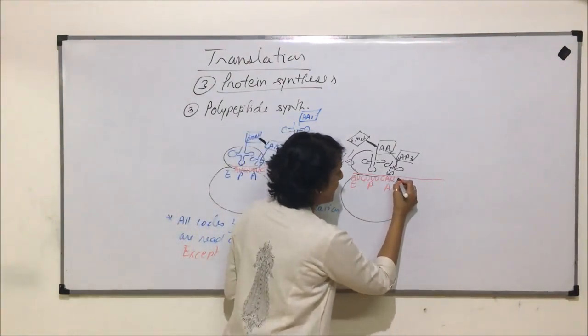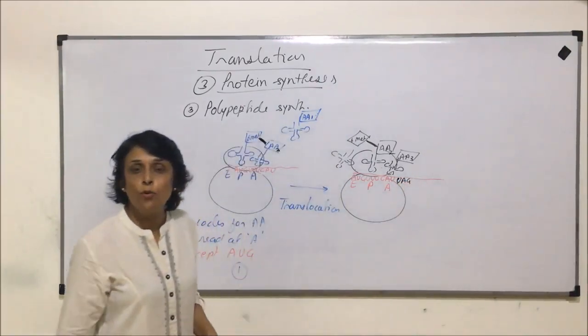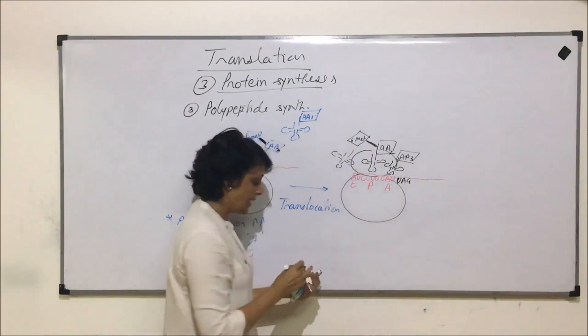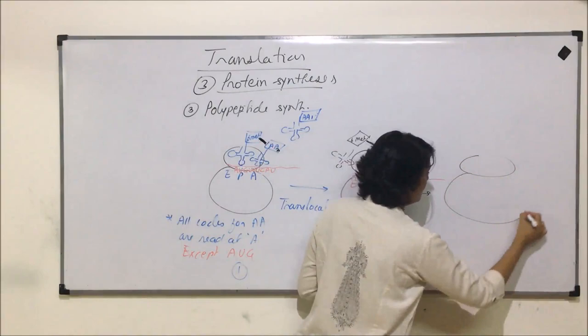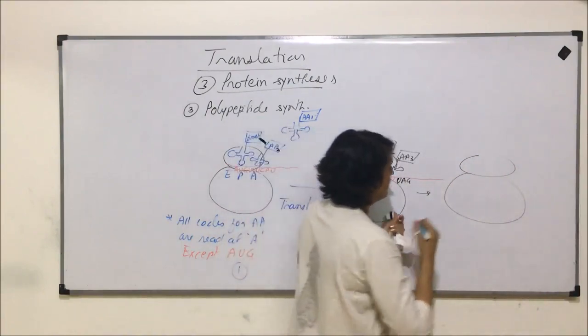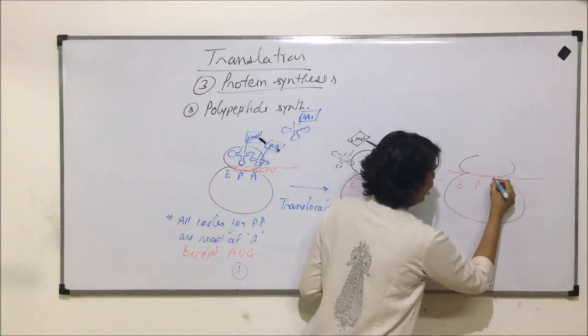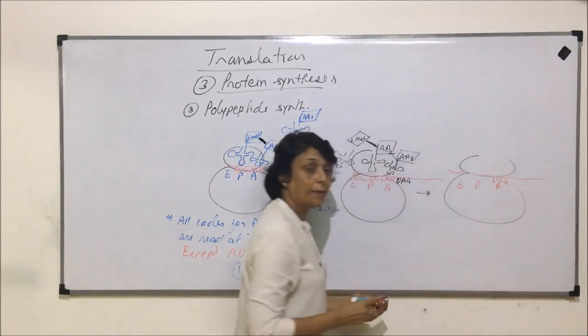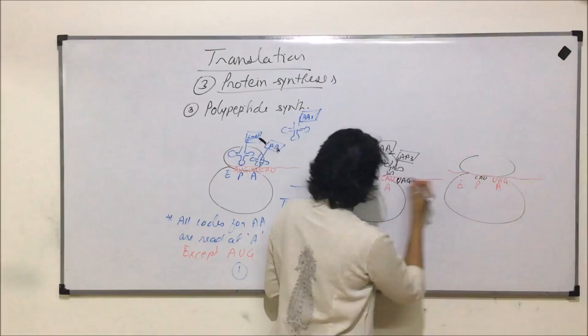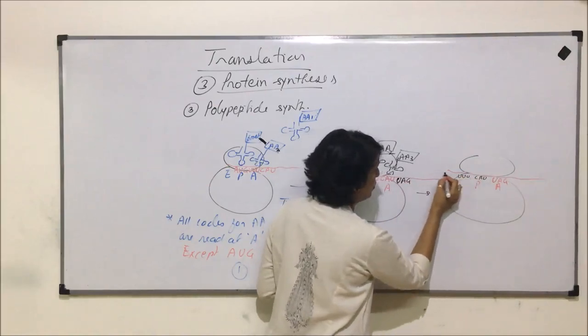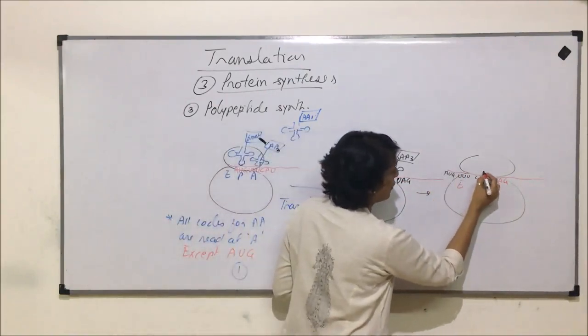Say after this, there is UAG, the stop codon. When UAG comes at site A, what is going to happen then? This is smaller subunit, the larger subunit. This is our mRNA site A, P and E. And at A is UAG. The other one was here, CAU. Then it was UUU. And here is AUG. This is how it has shifted. The tRNAs have left from here.